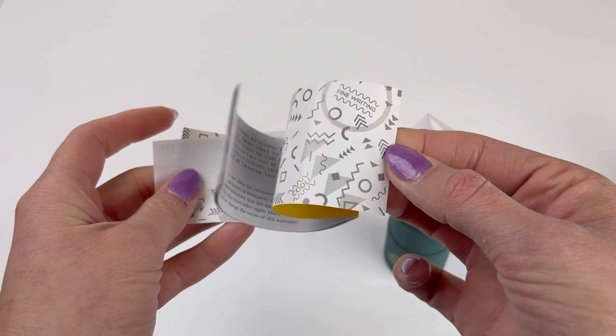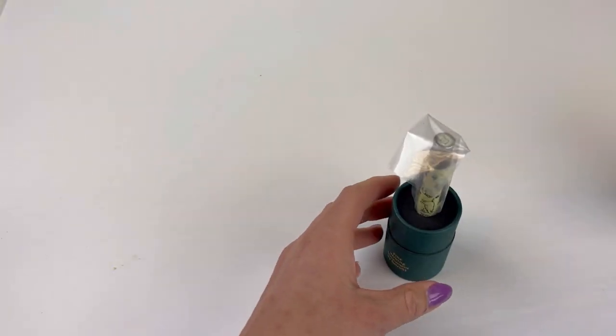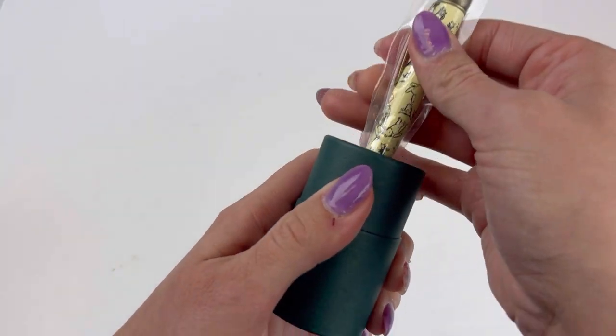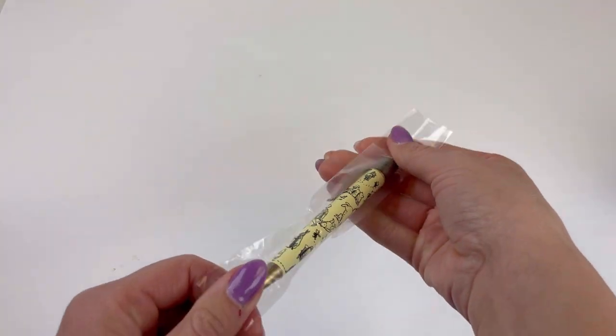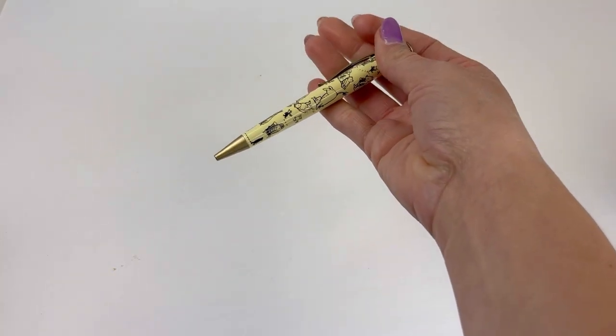If you're a Retro 51 collector, you already recognize the packaging it came in. It comes in this handy tube that you can use as a display case later if you want, with information on the company and the pen.